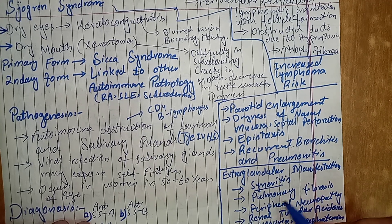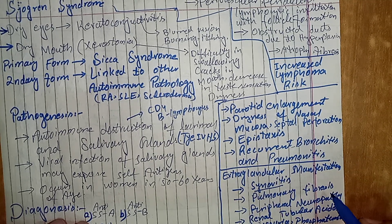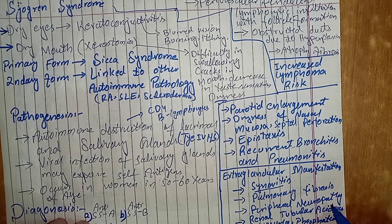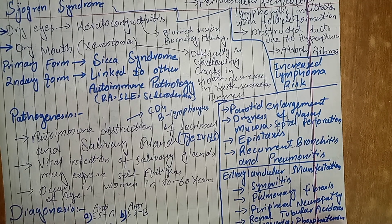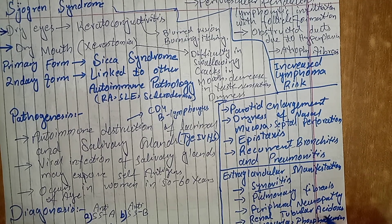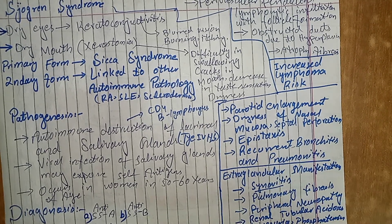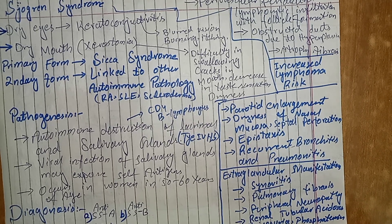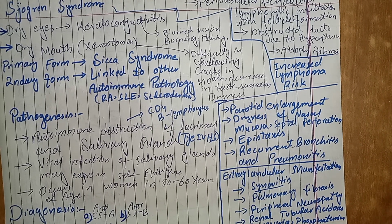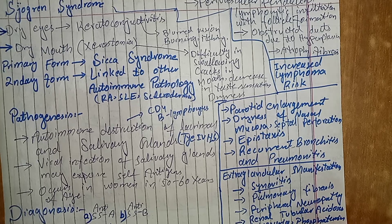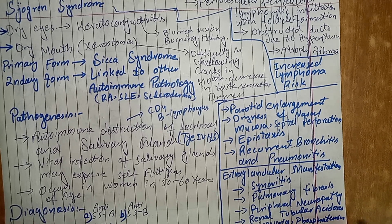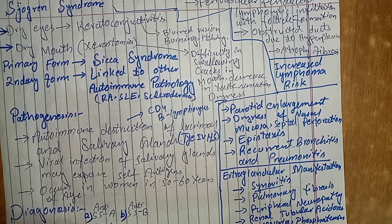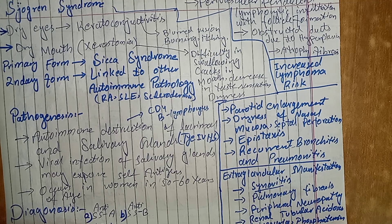Extra-glandular manifestations can also include pulmonary fibrosis, peripheral neuropathy, and renal tubular acidosis. Unlike systemic lupus, it does not cause glomerular damage; however, it can cause interstitial disease of the kidney, damage the renal tubules, and lead to glycosuria or phosphaturia.